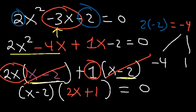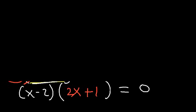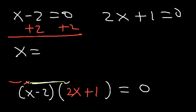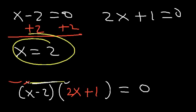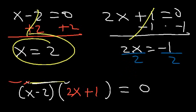Since it's still equal to 0, we can solve for x. Set each factor equal to 0. With the first factor, add 2 to both sides and we get x equals 2. For the other factor, subtract 1 from both sides to get 2x equals negative 1, then divide both sides by 2 to get x equals negative one half. So those are the two solutions.